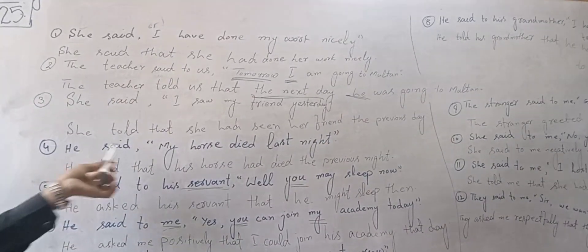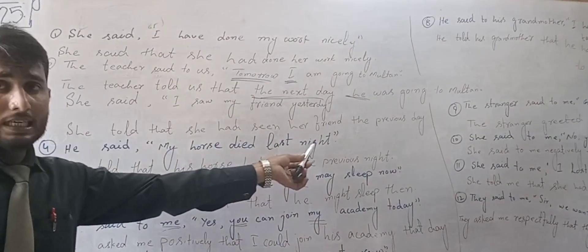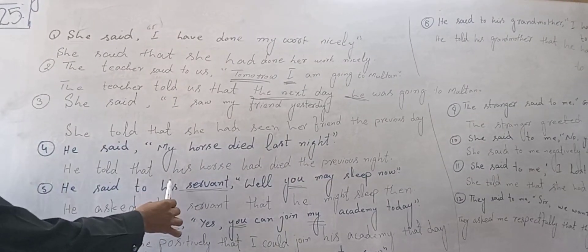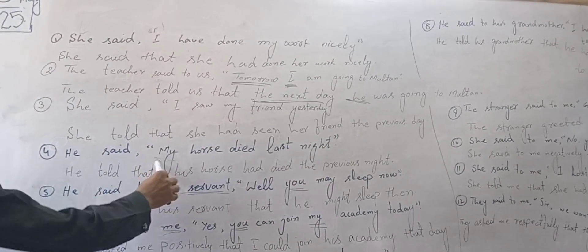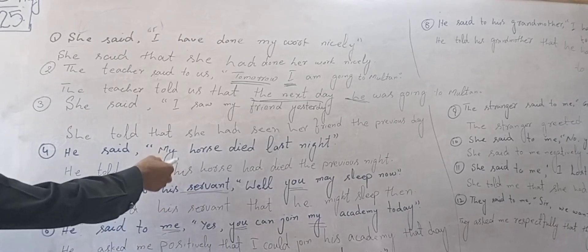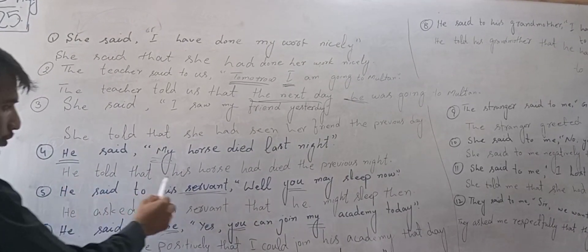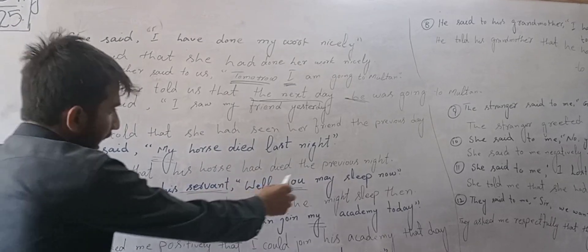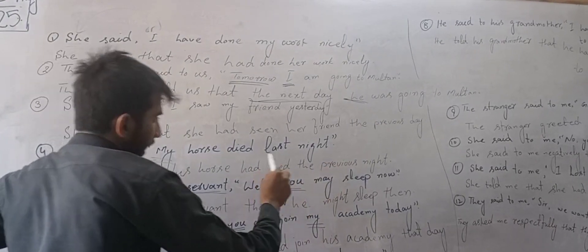He said: 'My horse died last night.' He told that his horse had died the previous night. Notice the first person possessive 'my' changes to third person 'his,' and 'last night' changes to 'the previous night.'